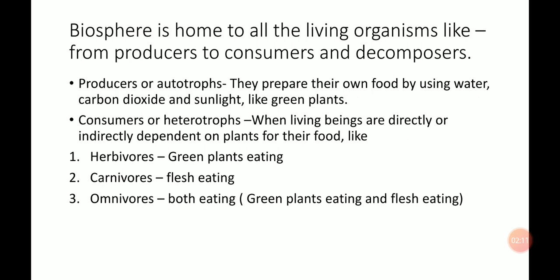When living beings are directly or indirectly dependent on plants for their food, they are known as heterotrophs or consumers — like goat, sheep, dog, etc. Now these consumers or heterotrophs are categorized into three. Let us start with the first: herbivores. Herbivores are the animals which eat plants only. Examples of herbivores are rabbit, sheep, goat, etc.